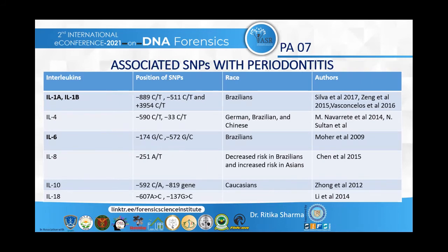Coming to interleukin-8, a meta-analysis by Chen et al. found that the risk association remains controversial — it was higher in Brazilian and Asian populations. Interleukin-10 is a suppressor cytokine that negatively regulates the immunological response of monocytes and macrophages. When the minus 592 C-by-A polymorphism was found, it was associated with a high risk of disease development in the population. A meta-analysis by Lee et al. on interleukin-18 found a significant association of polymorphisms with a high level of cytokine in the plasma of patients with periodontitis compared to controls.